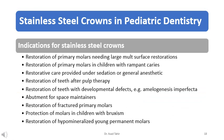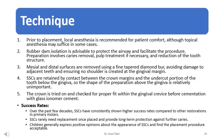Indications for stainless steel crowns include: restoration of primary molars needing large multi-surface restorations, restoration of primary molars in children with rampant caries, restorative care provided under sedation or general anesthetic, restoration of teeth after pulp therapy, restoration of teeth with developmental defects such as amelogenesis imperfecta, abutment for space maintainers, restoration of fractured primary molars, and protection of molars in children with bruxism. Restoration of hypomineralized young permanent molars is also an indication. Prior to placement, local anesthesia is recommended for patient comfort, and rubber dam isolation is advisable to protect the airway and facilitate the procedure.